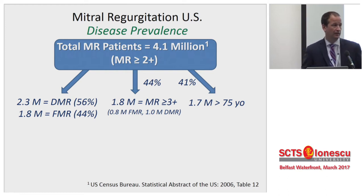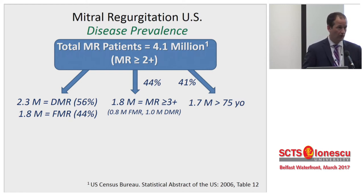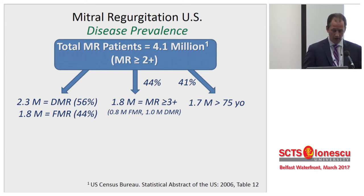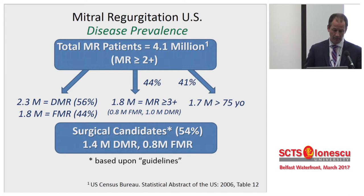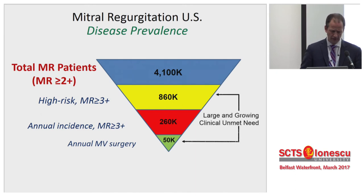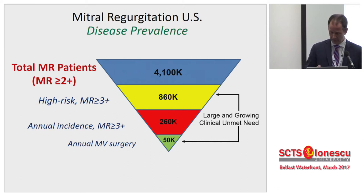It has been estimated that in the United States alone there are 4 million patients with MR 2-plus or more. Degenerative MR accounts for 56%, functional MR 44%, and 1.8 million people have 3-plus or more MR. Interpreting the guidelines strictly, 1.4 million patients require surgery for degenerative MR and 0.8 million for functional MR — yet we're only treating 50,000. There is a huge unmet need currently, and as surgeons we are only seeing the tip of the iceberg.